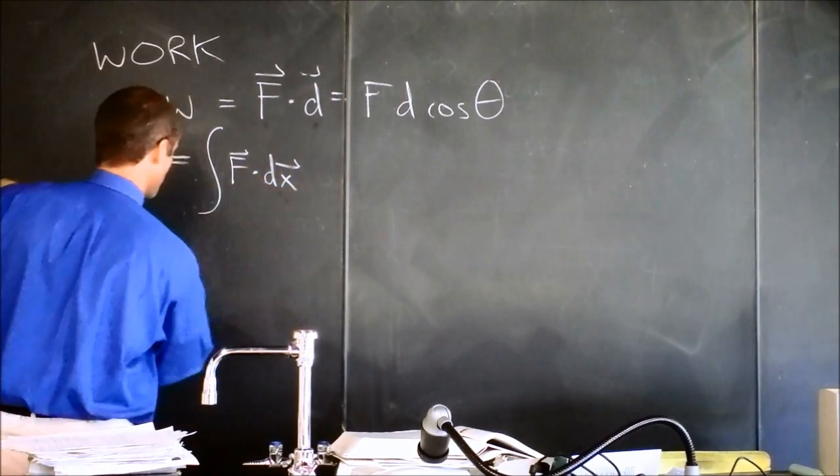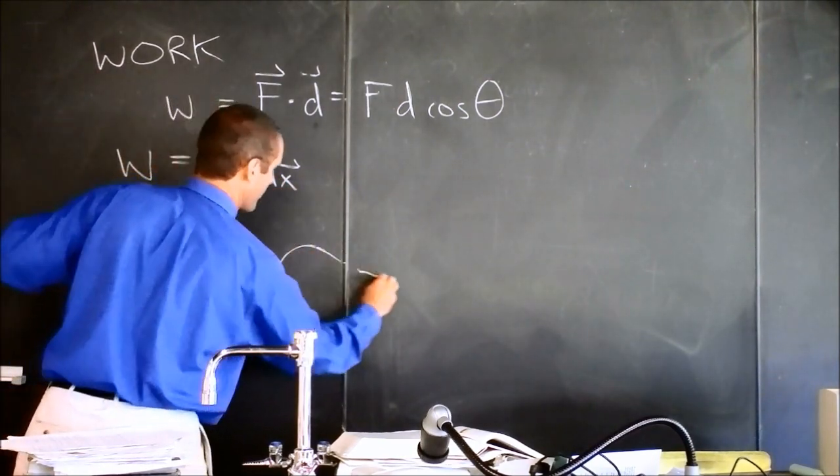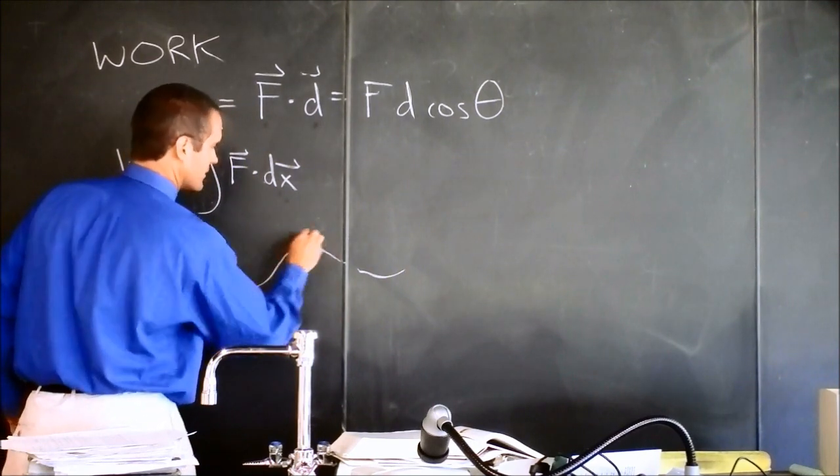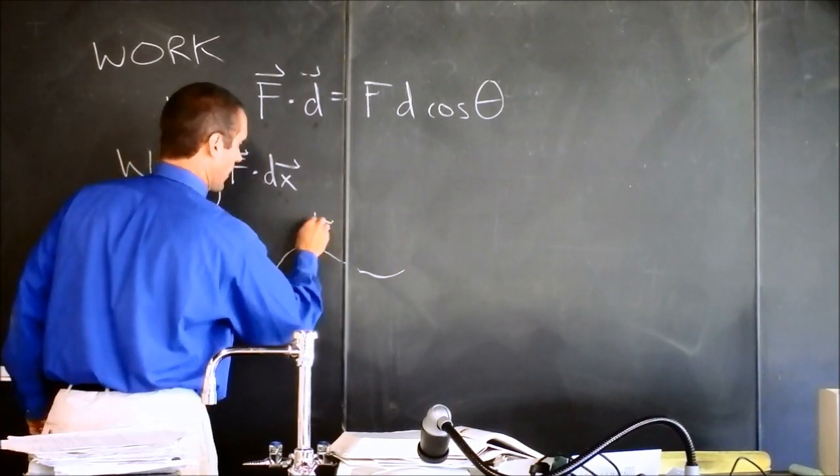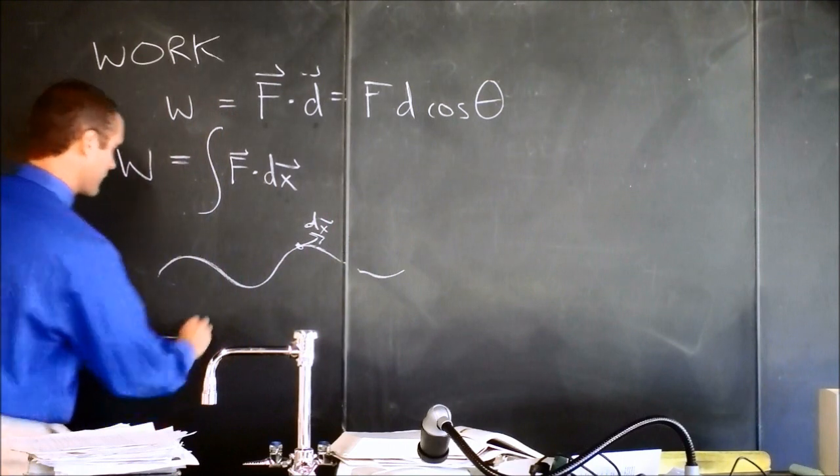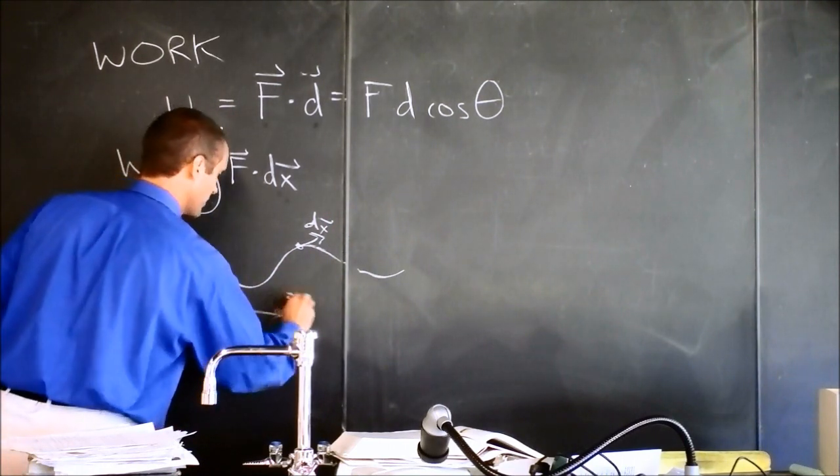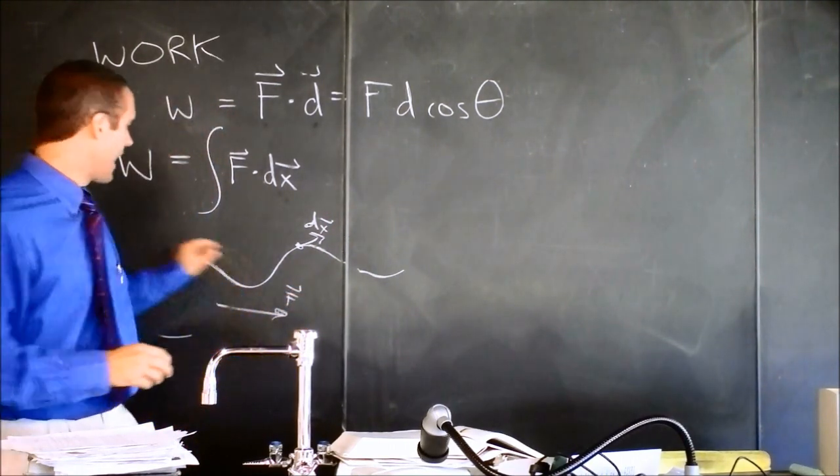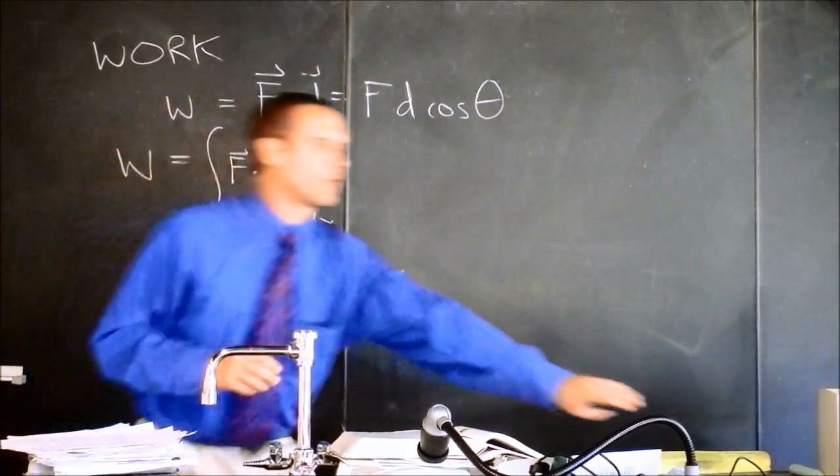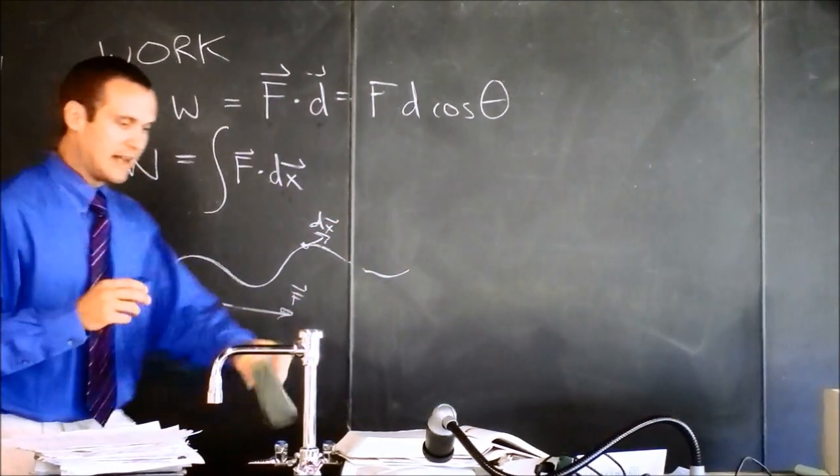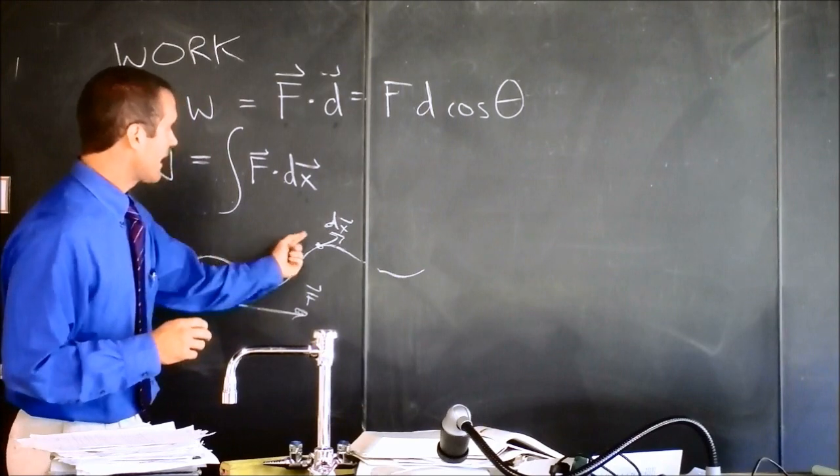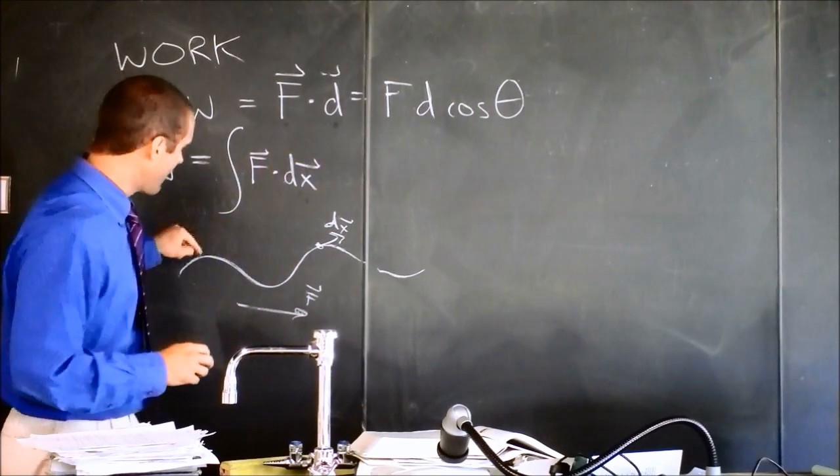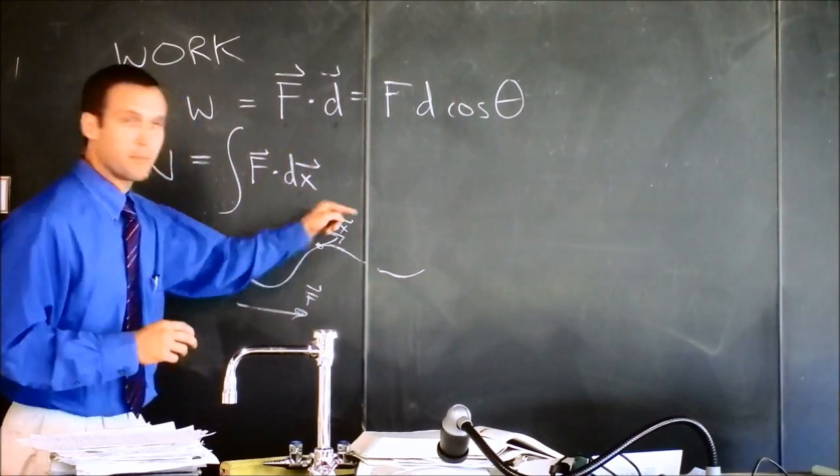So what we can do now is we can take some complicated path, and we can say at every instant there's a dx. That's the way that path is going. And if the force is some direction, then every little bit of this, it's like a Riemann sum.